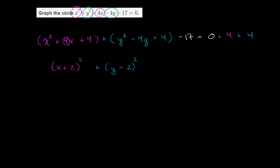And of course, we have the minus 17. But let's add 17 to both sides as well to get rid of this minus 17 here. So on the left, we're just left with these two expressions. And on the right, we have 4 plus 4 plus 17. Well, that's 8 plus 17, which is equal to 25.